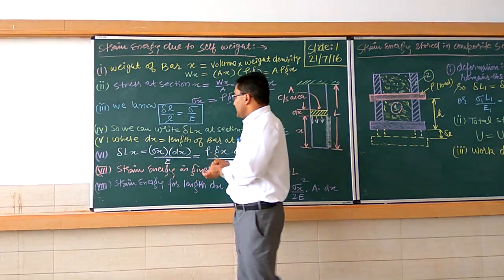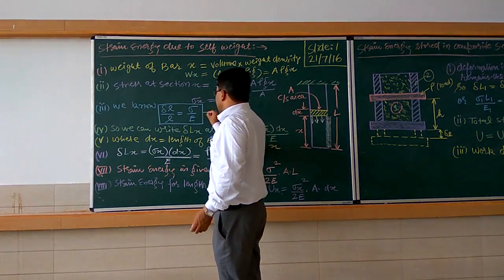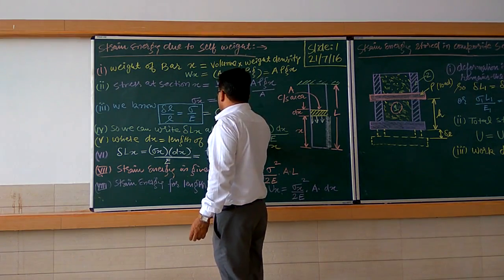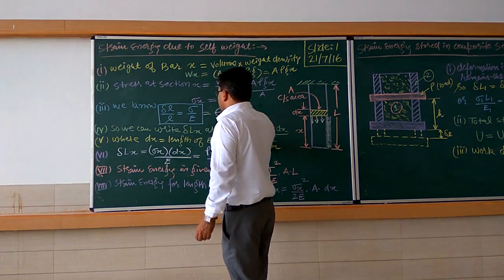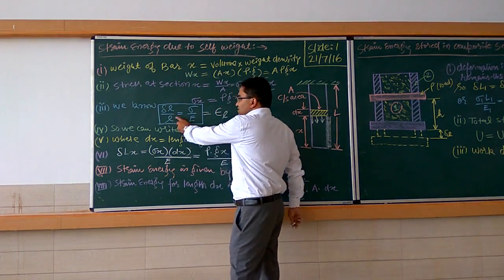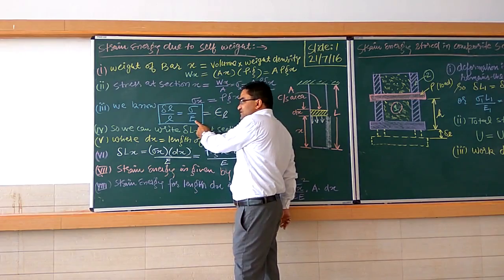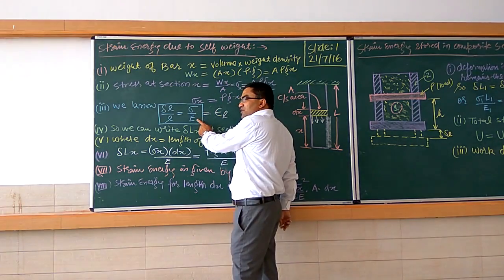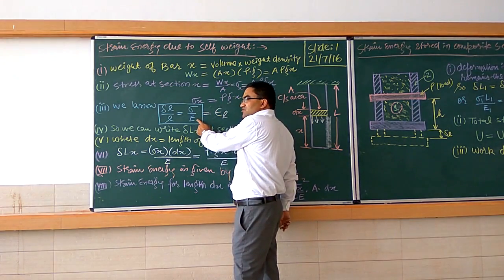We know from our study that the longitudinal strain can be given as σ divided by E — stress upon Young's modulus. Young's modulus E equals stress upon strain. From this relationship, we will derive how much strain has been produced in this strip.